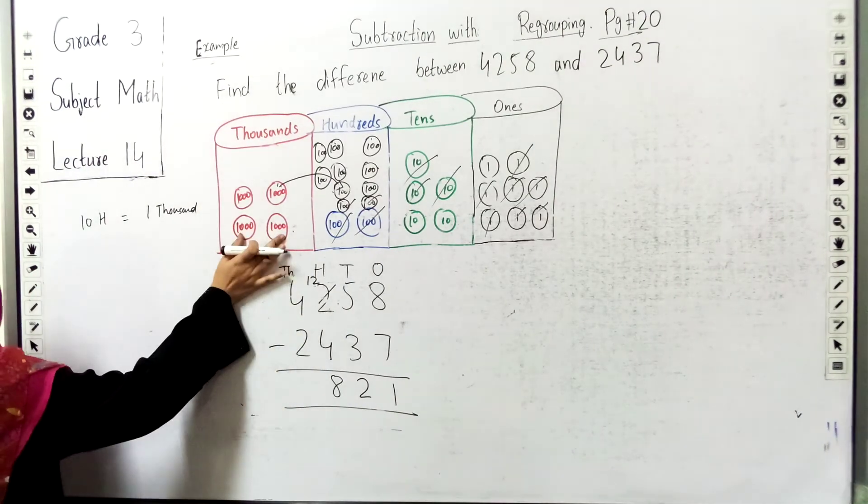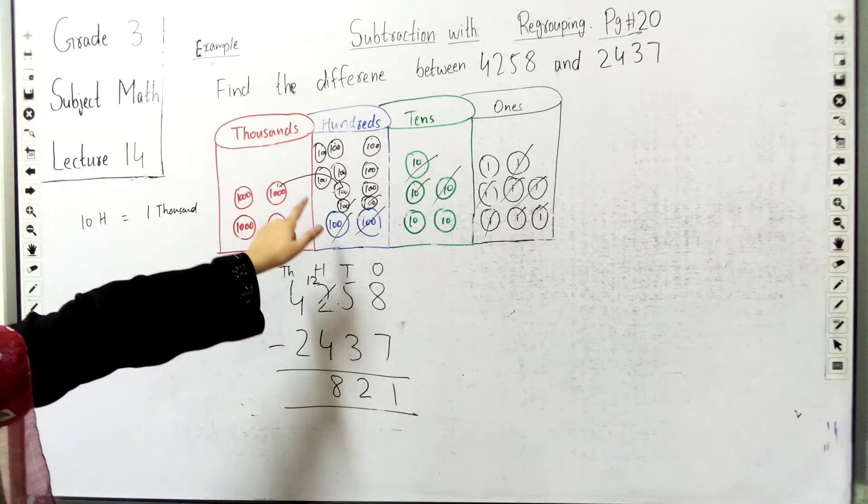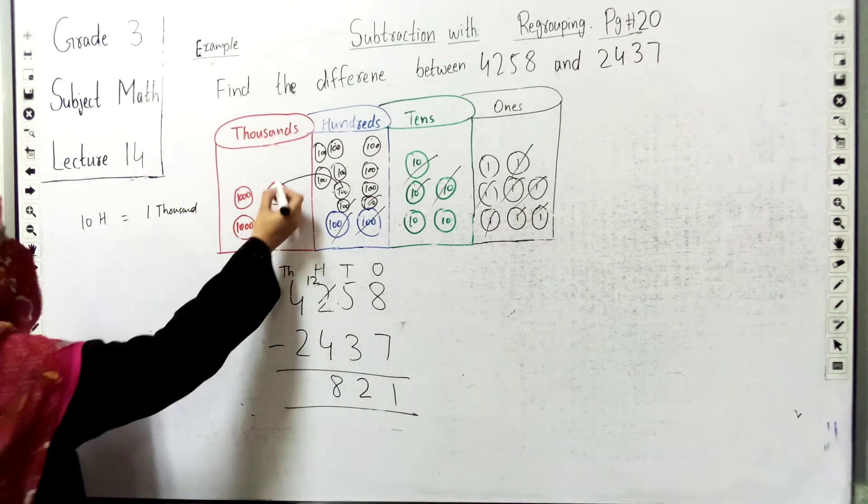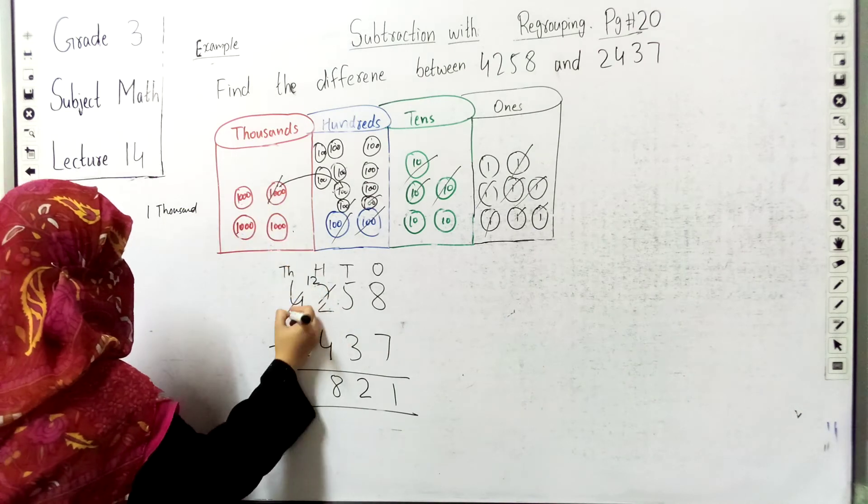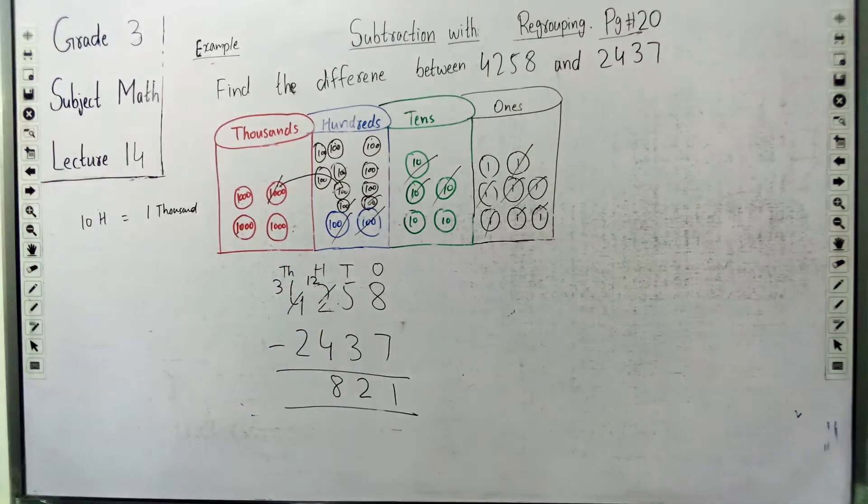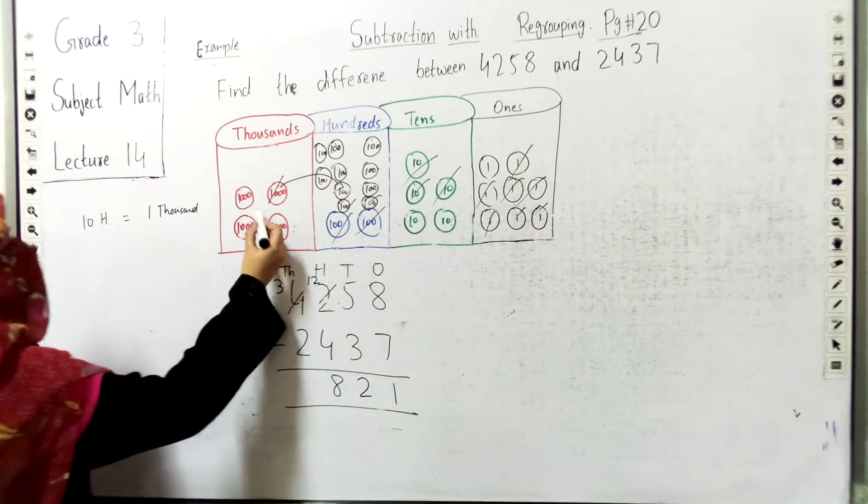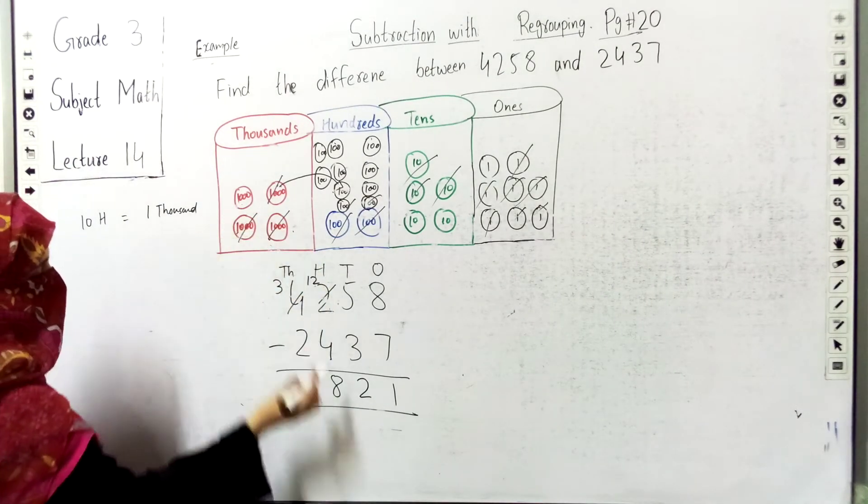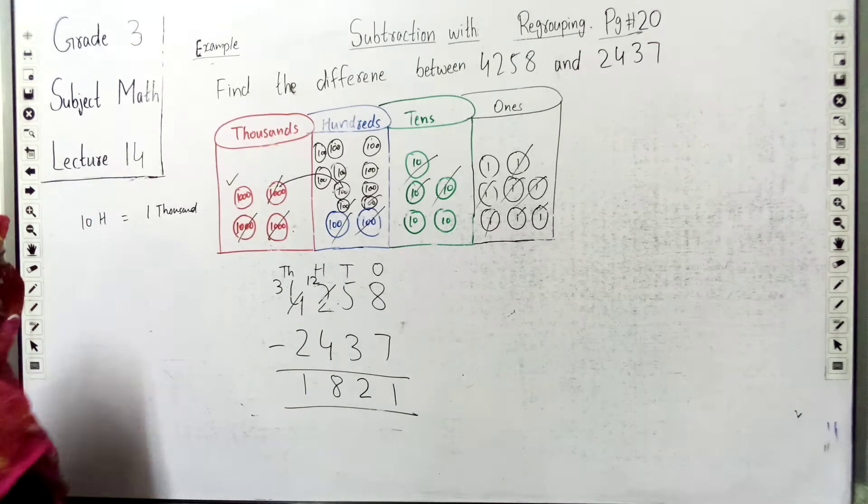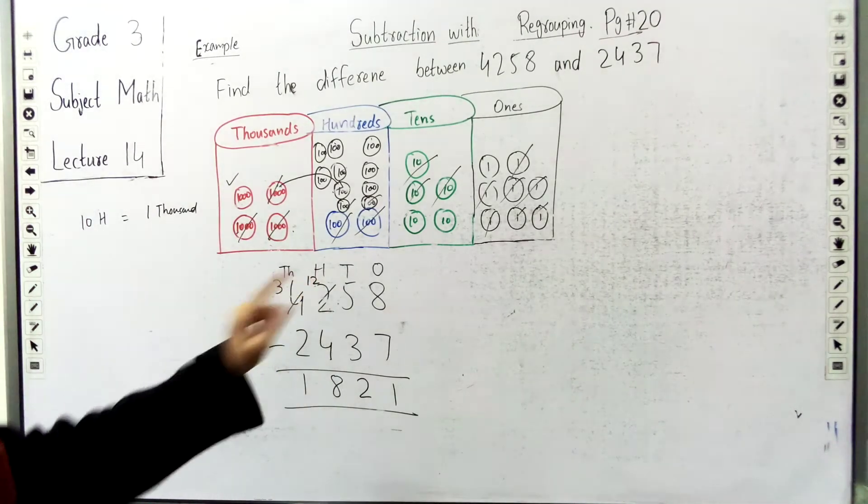Next, we have four blocks of thousand. We took one block, so we have three blocks remaining. Now we have 3 minus 2. So we have only one block of thousand remaining.